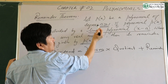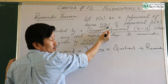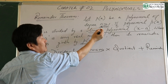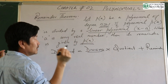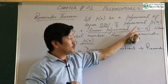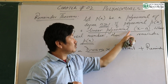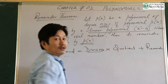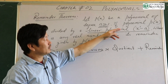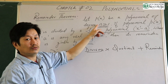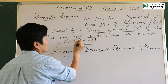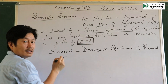So by definition, p of x is a polynomial of degree n greater than 1. If p of x is the dividend, and the polynomial p of x is divided by a linear polynomial x minus a, this sets up the remainder theorem.